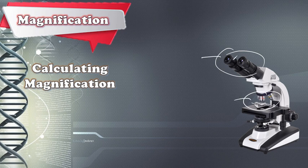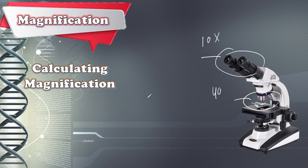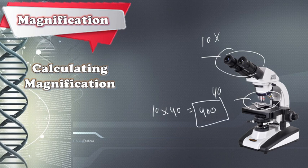So if the eyepiece lens magnifies 10 times and the objective lens magnifies 40 times, what is the total magnification of the microscope? We calculate it as 10 times 40, which equals 400. So this microscope magnifies 400 times. If you change the lens, you may get a different magnification.